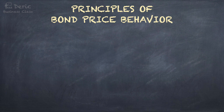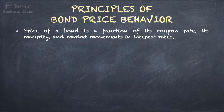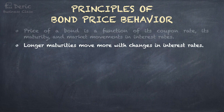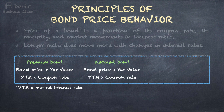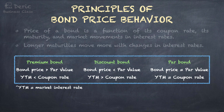As principles of bond price behavior, the price of a bond is a function of its coupon rate, its maturity, and market movements in interest rates. Longer maturities move more with changes in interest rates. You will get a premium bond if the bond price is above par value, or YTM is below the bond's coupon rate. For a discount bond, the bond price is below par value, or the market interest rate is above the coupon rate. You will get a par bond when the bond price equals par value, or the market interest rate equals the coupon rate.